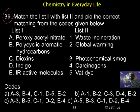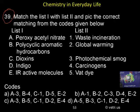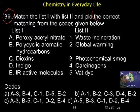Question 39: Match List 1 with List 2 and pick the correct matching from the codes given below. List 1 contains: peroxy acetyl nitrate, dioxin, and indigo. List 2 contains: waste incineration, polycyclic aromatic carbon, global warming, photochemical smog, carcinogens, IR active molecule, and vat dye.